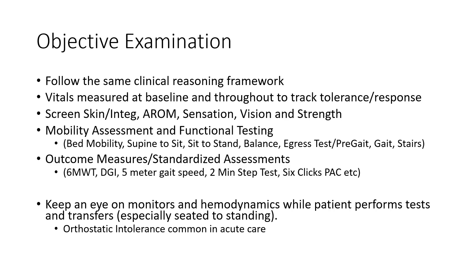I want to stress the value of using standardized outcome measures even in the acute care setting. The six-minute walk test, DGI, and five-meter gait speed can all provide quantitative objective benchmarks rather than just saying 'the patient ambulated 100 feet and looked good.' These tests don't require a lot of instrumentation and we're kind of already doing them — but providing hard numbers tracks progress and gives us a better place at the table when communicating with the interdisciplinary team about the patient and how our services are involved.